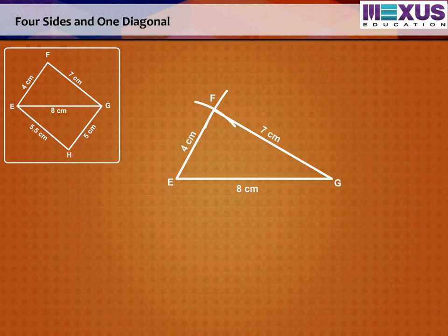Step 2. Now we have to locate the fourth point H. This H would be on the side opposite to F, with reference to EG.